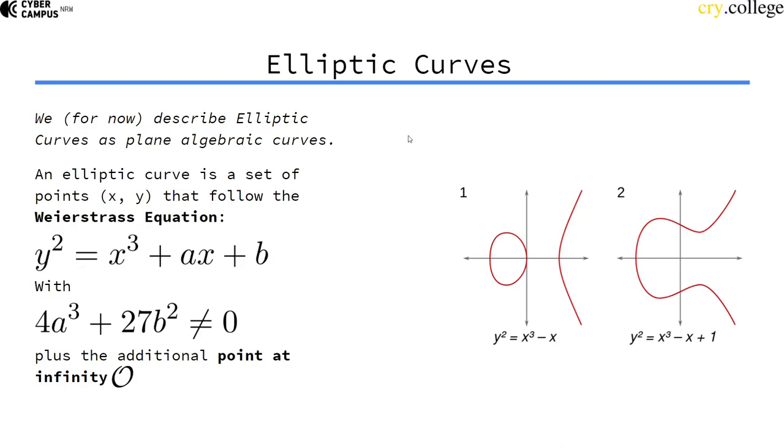So we have these parameters here of the curve, A and B, and we have the additional constraint that this here is not zero, which avoids the curve being singular. What that means we'll see a bit later.